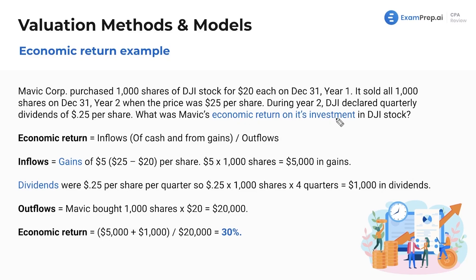What is the economic return on the investment in the DJI stock? The economic return is inflows — all the cash received from dividends and from gains in stock appreciation (or losses in stock appreciation, keep that in mind) — divided by outflows. In this case, we have gains of five dollars per share: the stock is now $25 and we bought it for $20.